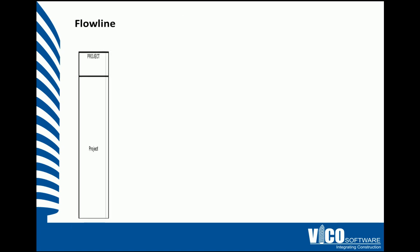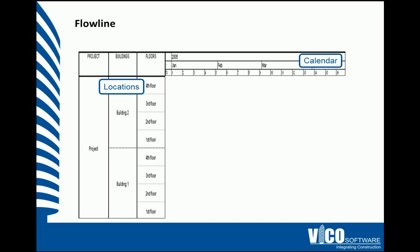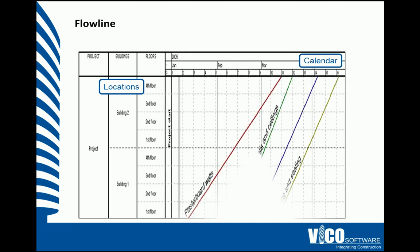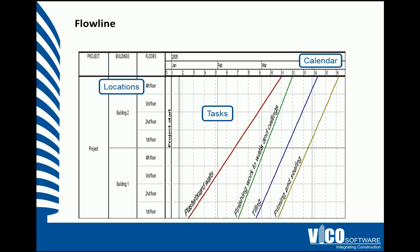Flowline schedules consist of a location breakdown structure in the vertical axis, and a calendar in the upper horizontal axis. Within our schedule view, we have a series of sloping lines, which are representations of our tasks.